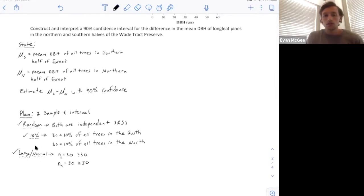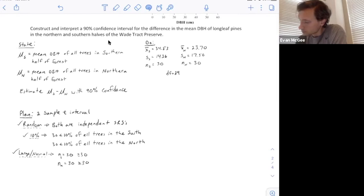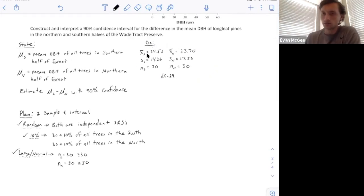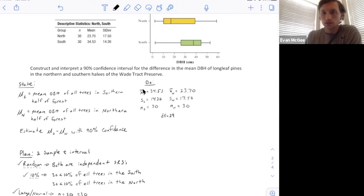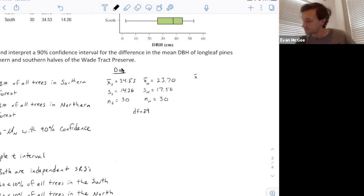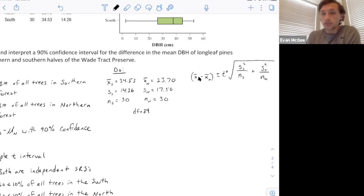Don't make the mistake of checking large counts here—large counts is for proportions, and we're working with means. Now we'll do the actual interval. Before I do anything with the interval, I like to list out any information I have from my sample. It's not totally necessary here because they've given it to us, but generally I like to write it out. Then I'll write the formula for the confidence interval and plug in all the values.